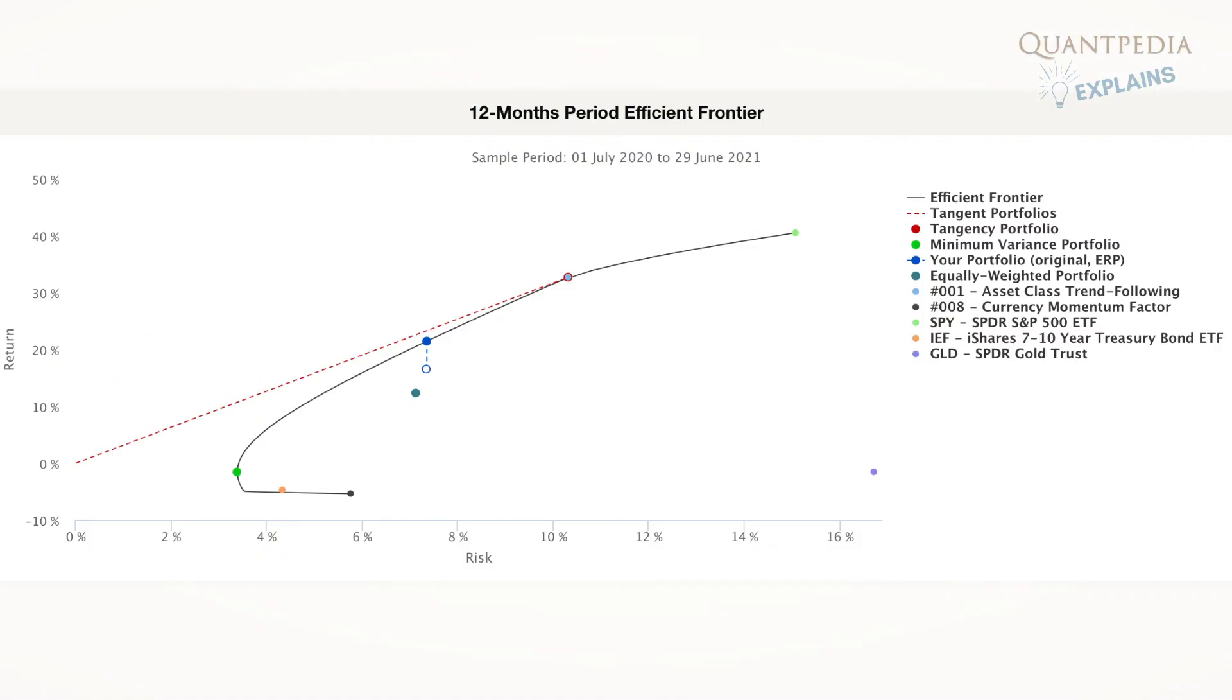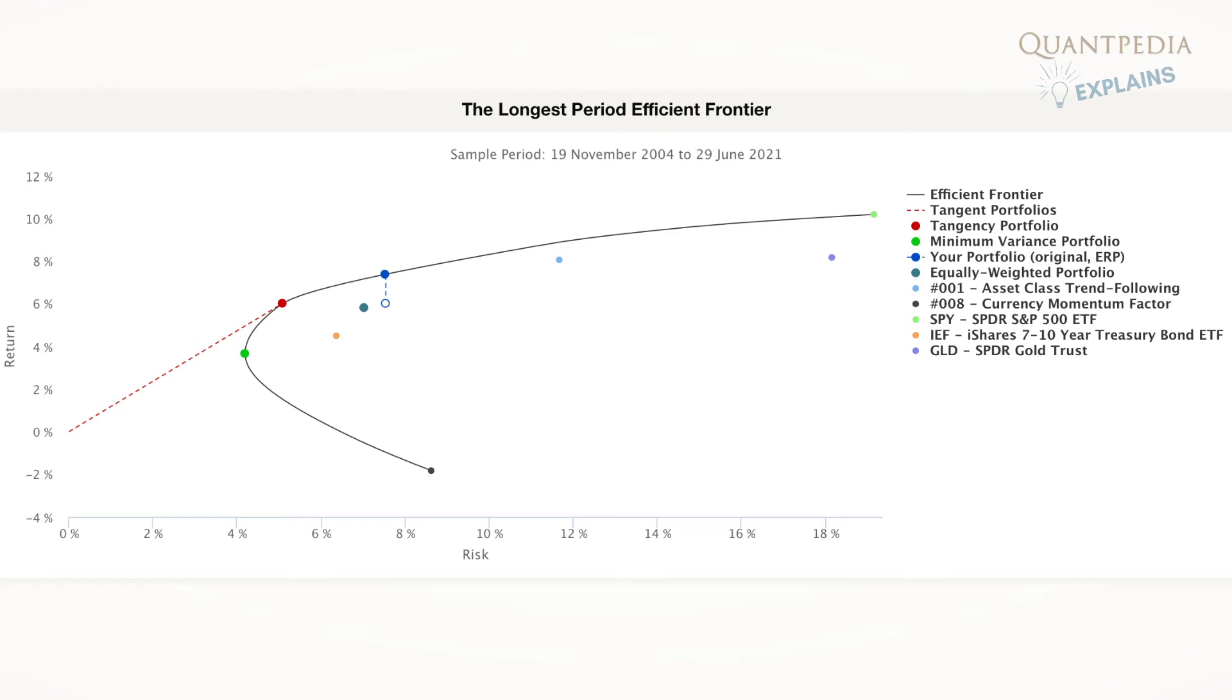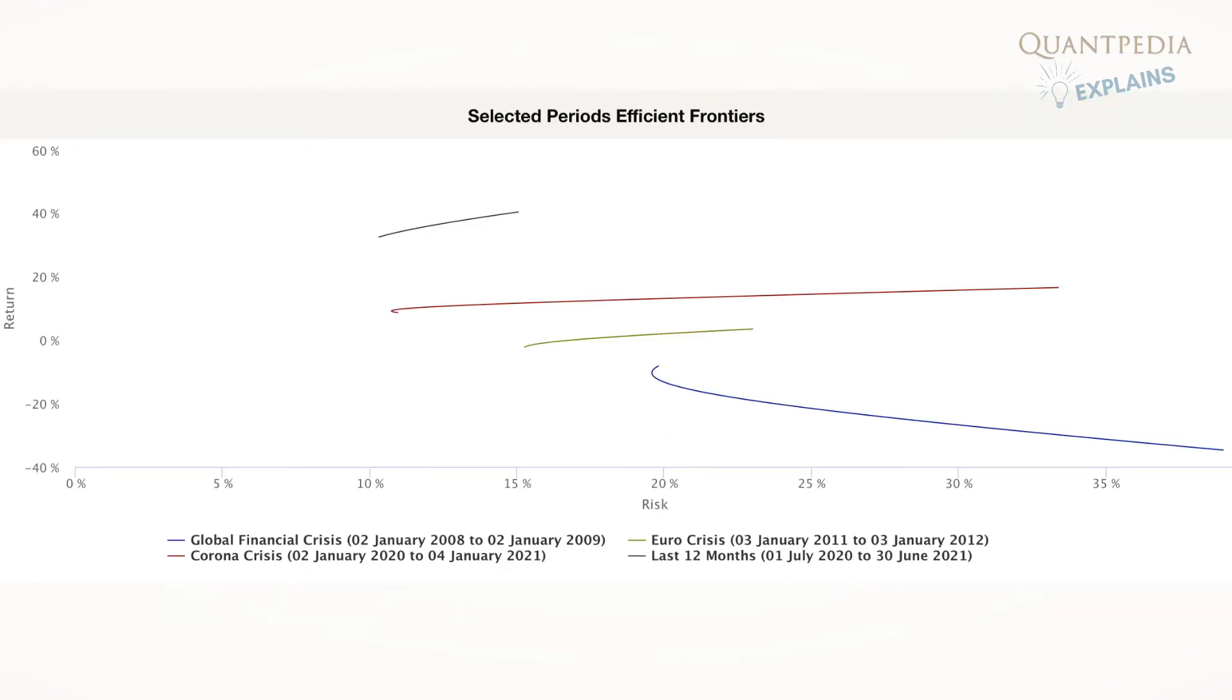You can review the actual 12 months period, the most extended available period, and multiple 12 months periods containing the most significant market drawdowns over the last 20 years.